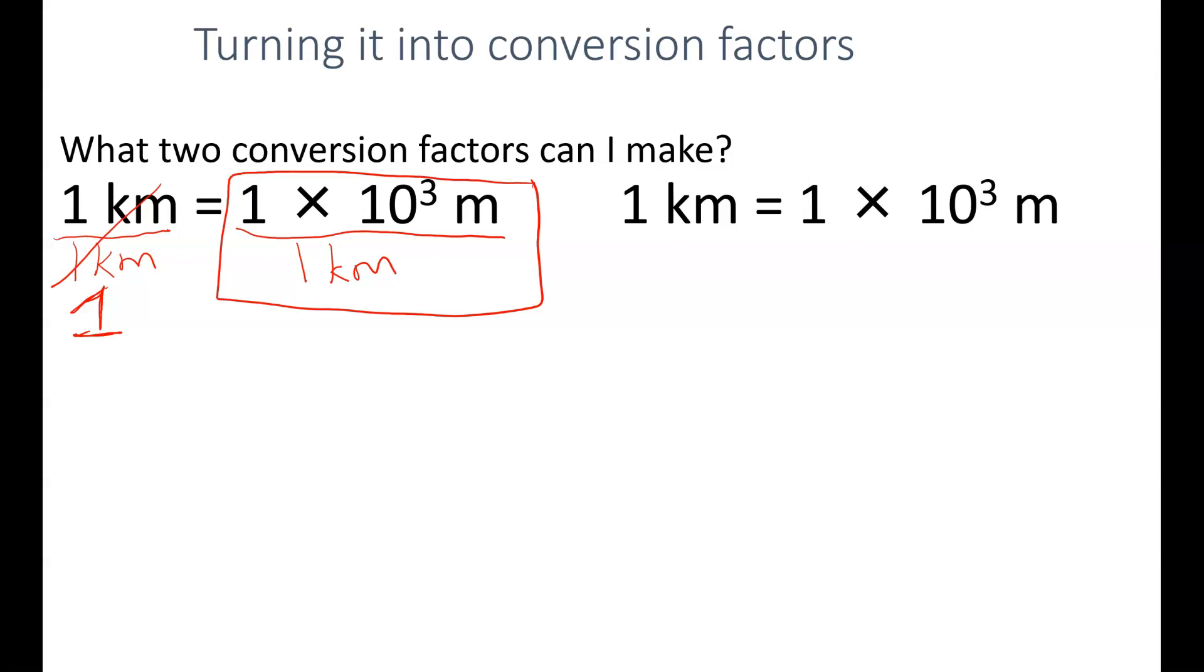The other conversion factor I can make from this equivalence, I would use the other side of my equation, the 1 times 10 to the 3rd meters. Divide both sides by the same value. Since this is 1 times 10 to the 3rd meters over 1 times 10 to the 3rd meters, that's going to give me the value of 1.